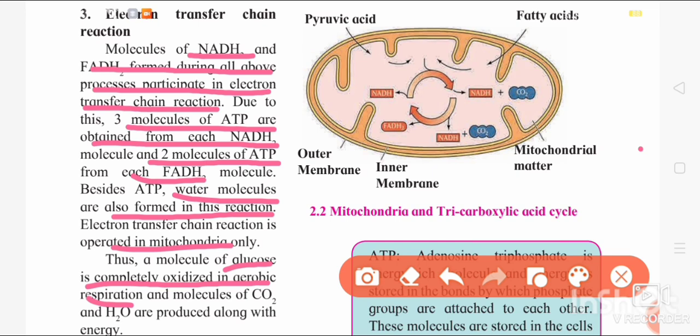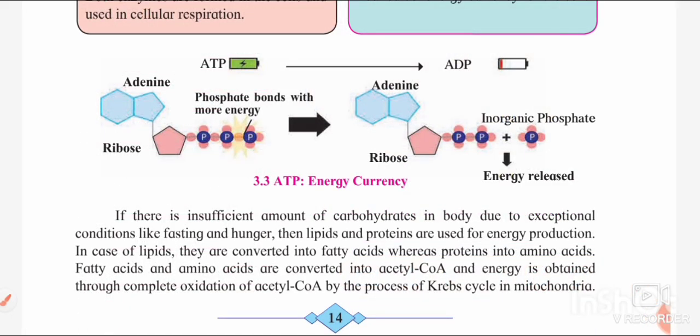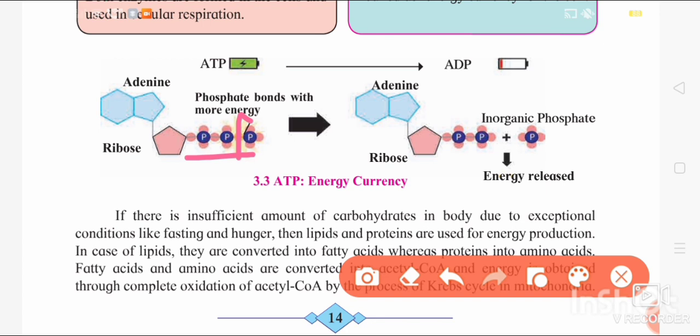After complete glucose oxidation, CO2 and H2O molecules are produced along with energy in the form of ATP. ATP is considered the energy currency — adenosine triphosphate has 3 phosphates. When we break the bond between phosphate groups, energy is released. Adenosine triphosphate becomes ADP (adenosine diphosphate) when one phosphate is removed, and energy is simultaneously released. This is how energy is released by using ATP.